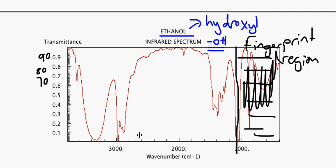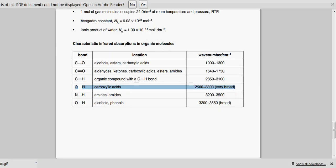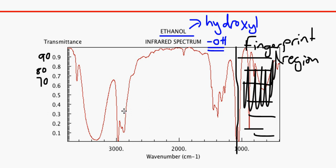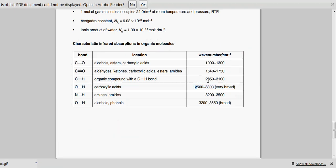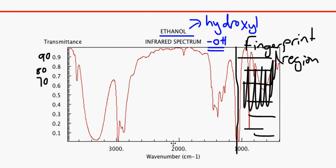Let's have a look. From 2500 to 3300, I'd say that was broad. That means a lot of infrared radiation has been absorbed at 3000 centimeters to the power minus one. That means we've got an OH group here.